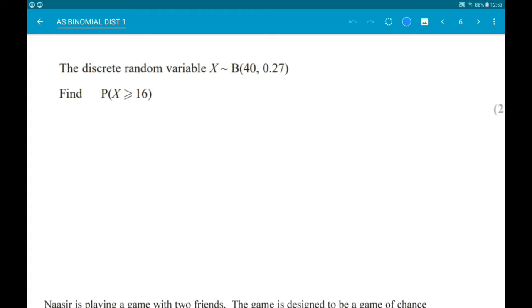So again, this is wanting the probability to the right and including x. The calculator works out probabilities from the left up to the value of x. So if we want x being 16, 17, 18, etc., we don't want x being 15, 14, 13, etc.